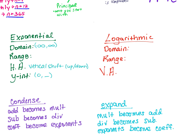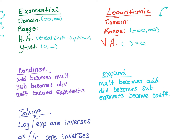For log functions, the range is all real numbers — negative infinity to positive infinity. Your domain has to do with your vertical asymptote. Take the expression in the parentheses, set it equal to 0, and solve for X. That gives your domain boundary. If the line goes right, domain is from that value to infinity. If it goes left, it's from negative infinity up to that value. Make sure you pay attention to your negatives and represent reflections correctly.